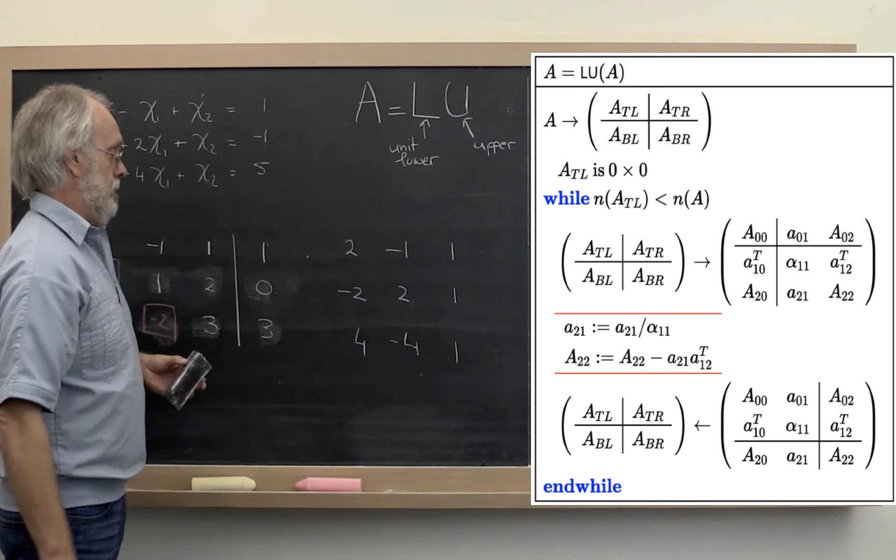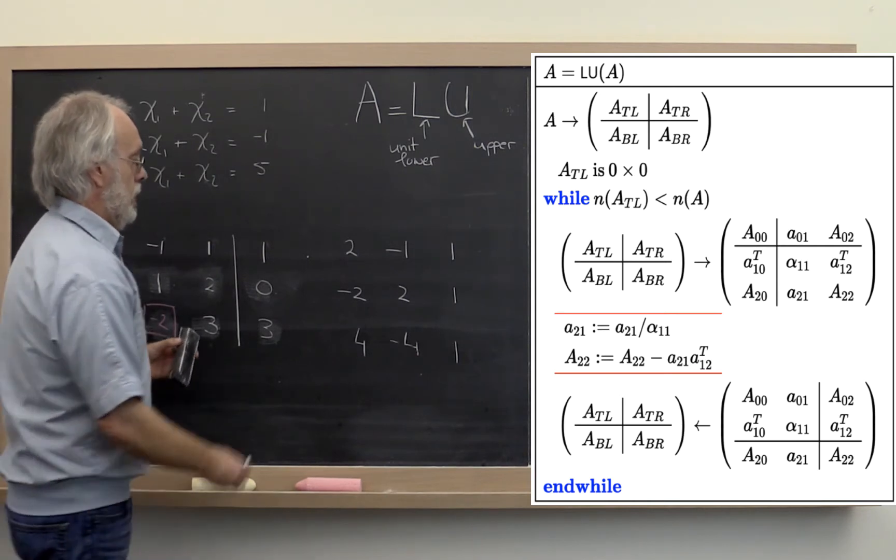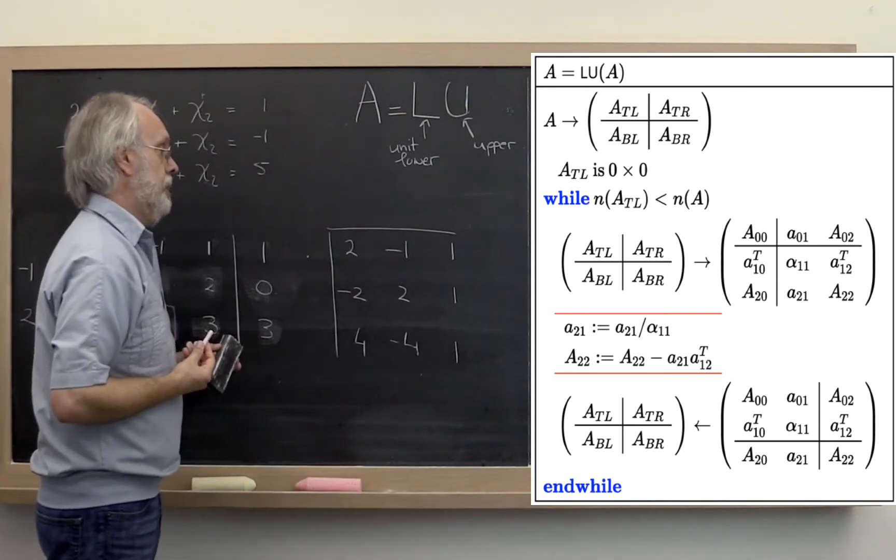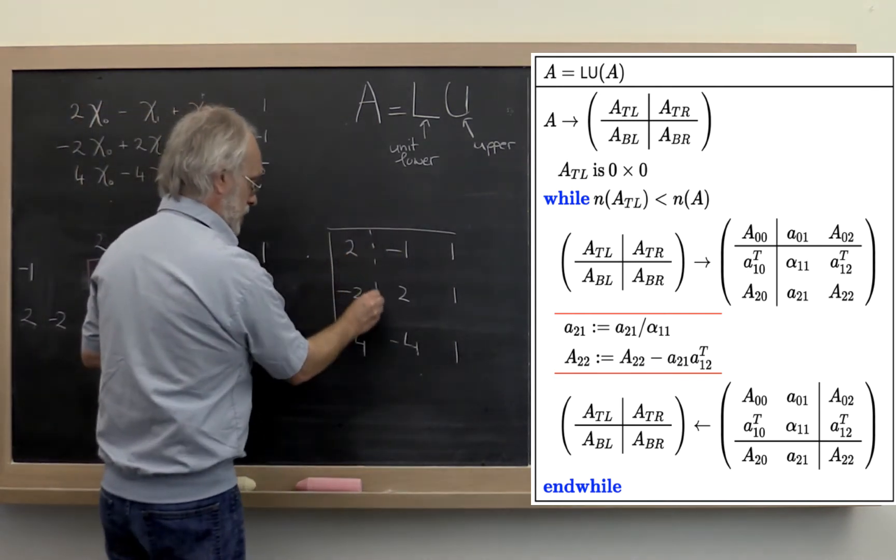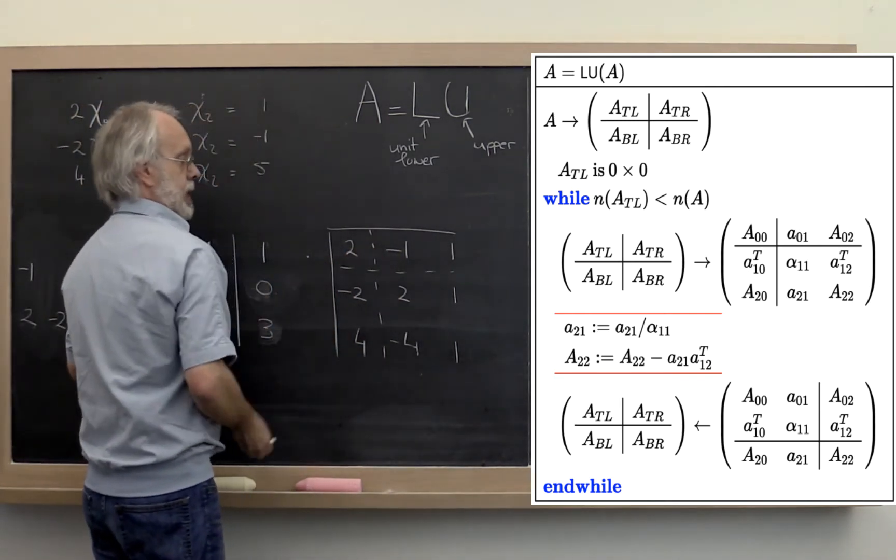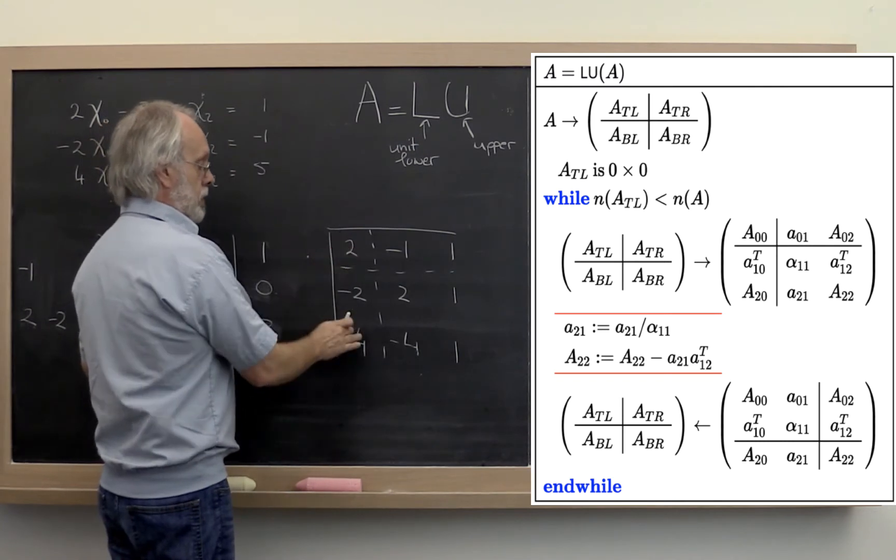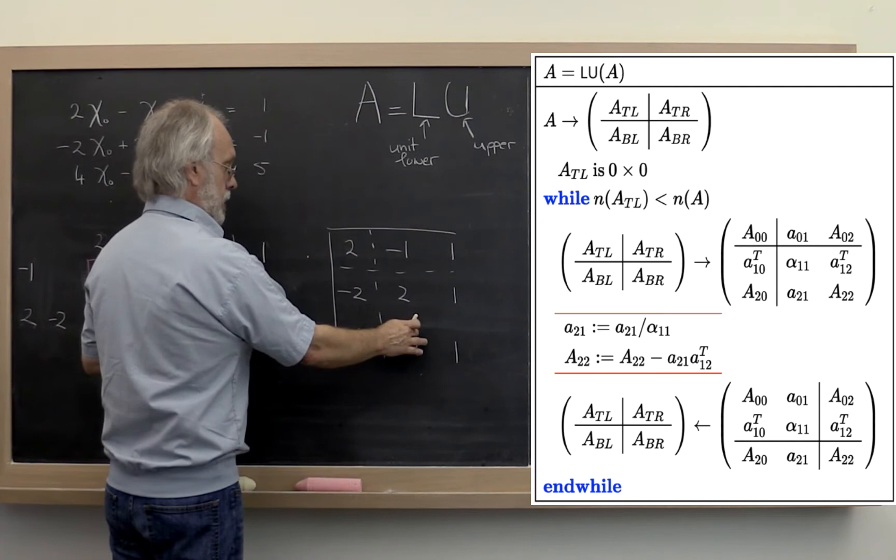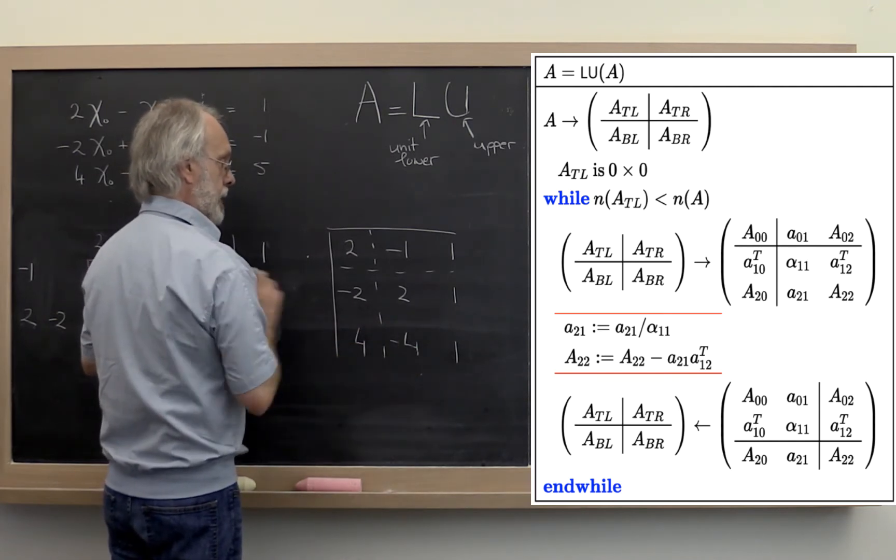What does this algorithm tell us to do? Well, initially the line is on the edge there, and then we repartition. Then this is alpha 1,1, A 2,1, A 1,2 transpose, A 2,2.